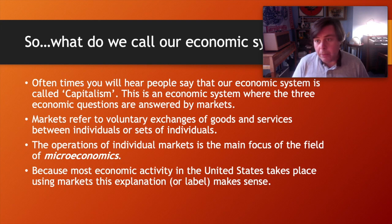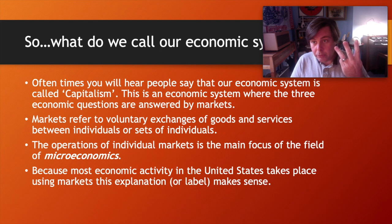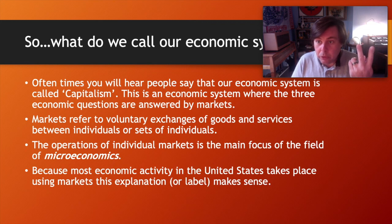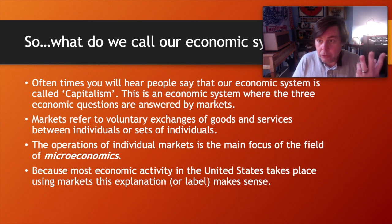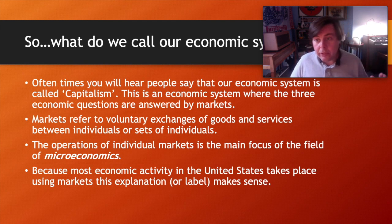Capitalism is an economy organized primarily through markets based upon private ownership. It answers the three economic questions through markets: what to produce is what people are willing and able to buy; how to produce is determined by market competition forcing lower costs onto firms; for whom to produce — those who are willing and able to pay shall receive. The operation of individual markets is the focus of microeconomics, Econ 103.